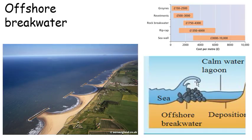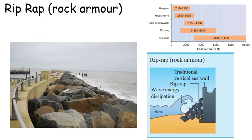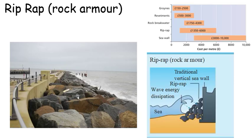The last one is riprap, often referred to as rock armour. Large angular boulders — made of very resistant lithology, most likely granite, so they don't erode — are placed on the back shore. They aim to break up and dissipate wave energy and prevent cliffs being undercut. They are often used in conjunction with a seawall. That is your five hard engineering strategies, or techniques.